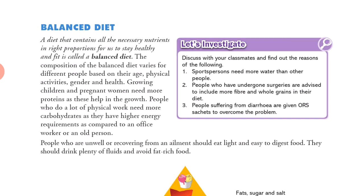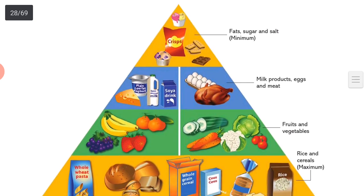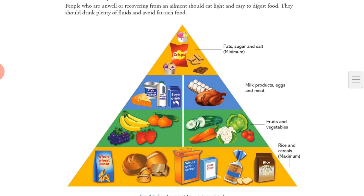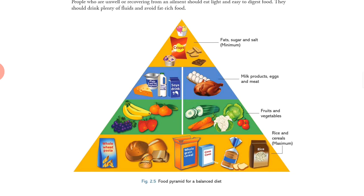The composition of a balanced diet can change with age group and the tasks we are doing. As discussed, pregnant women and children need more protein. Looking at the food pyramid for a balanced diet, fats, sugar and salt should be minimum in our diet.